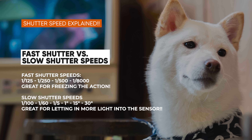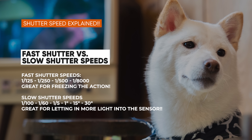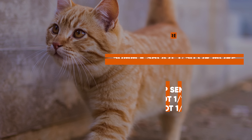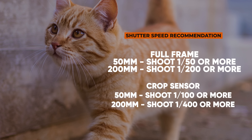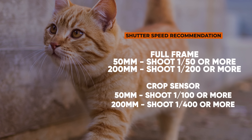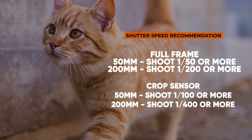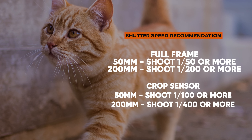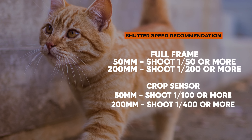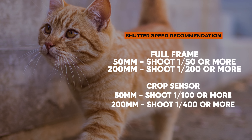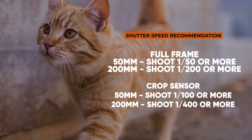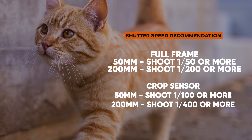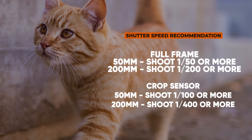There's actually a golden rule to shutter speed, otherwise known as the handheld rule. Your shutter speed must match the focal length you're shooting with if you're shooting with a full-frame sensor camera. For APS-C crop sensor users, double your shutter speed. For example, if you're shooting with a 50mm lens, your minimum recommended shutter speed should be 1/50. With a crop sensor camera and a 50mm lens, your minimum should be 1/100.